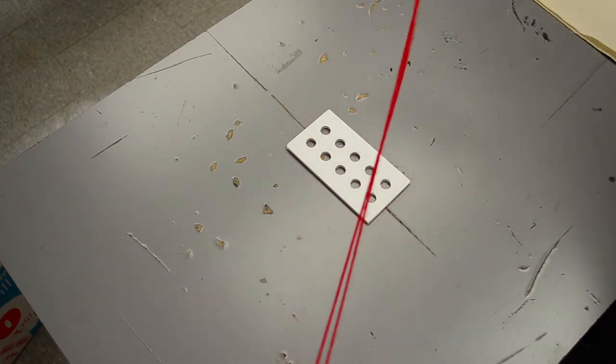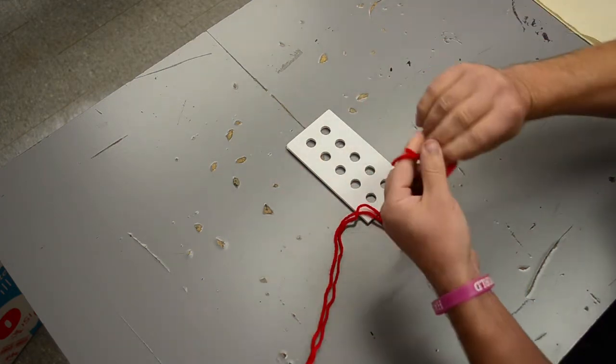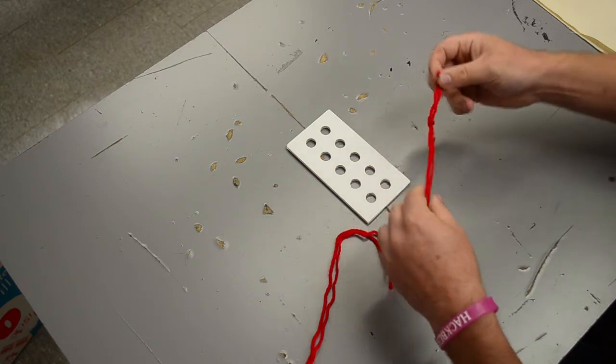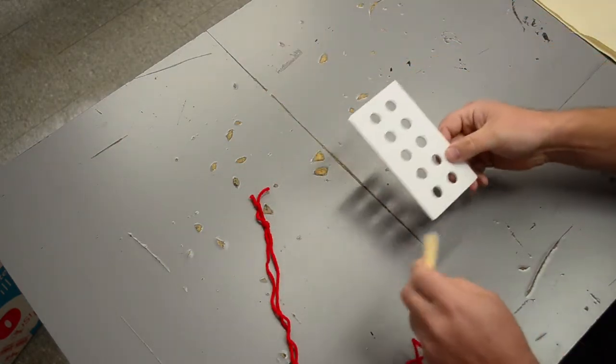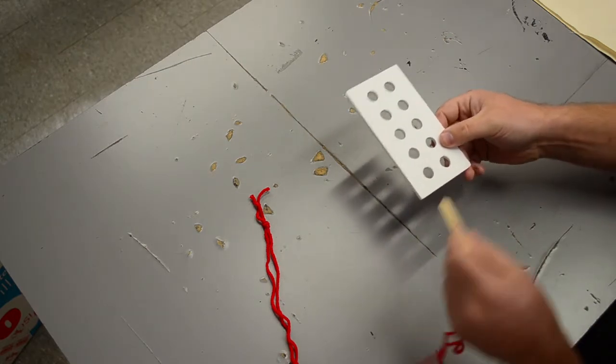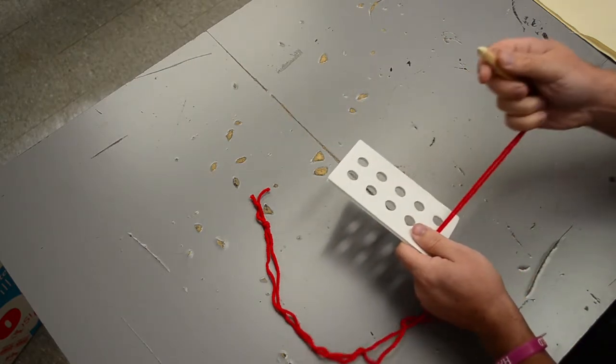We're going to tie just a loose knot in the end to keep things nice and tight. What you'll do is when you start the stitch, you'll actually come up underneath the fabric.